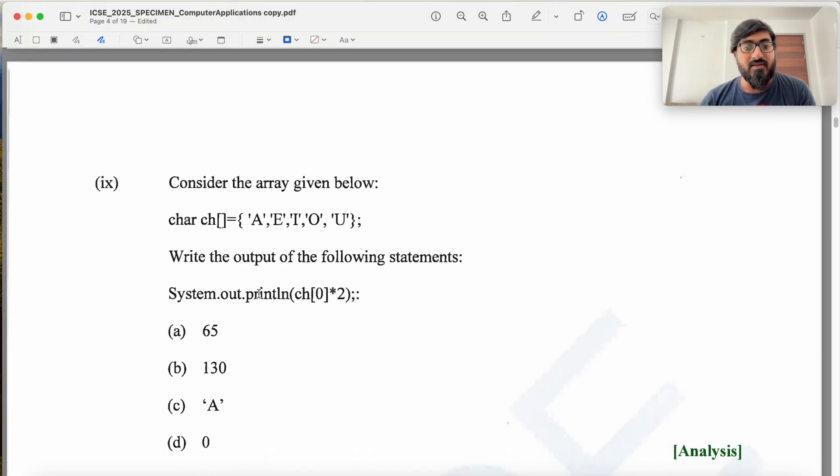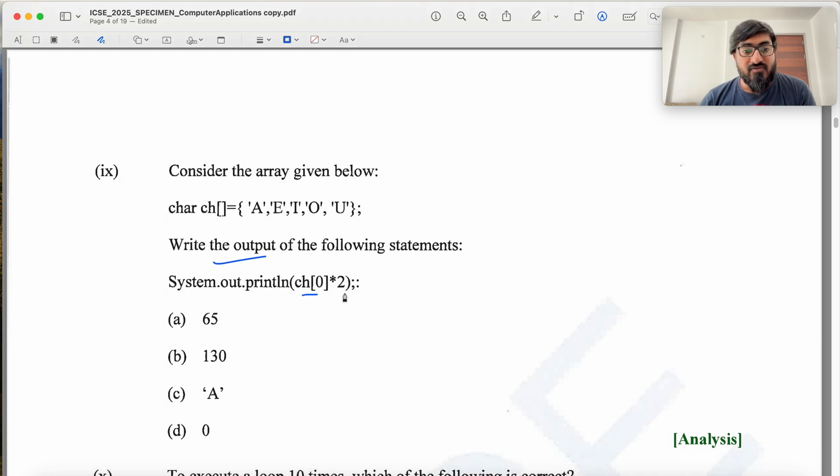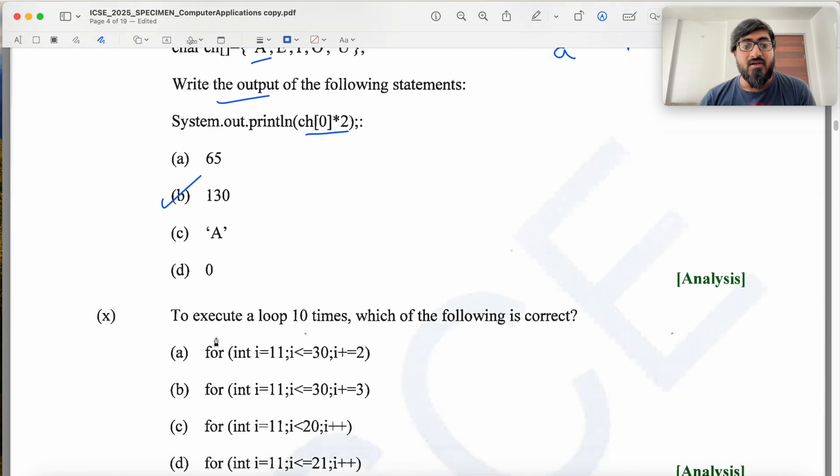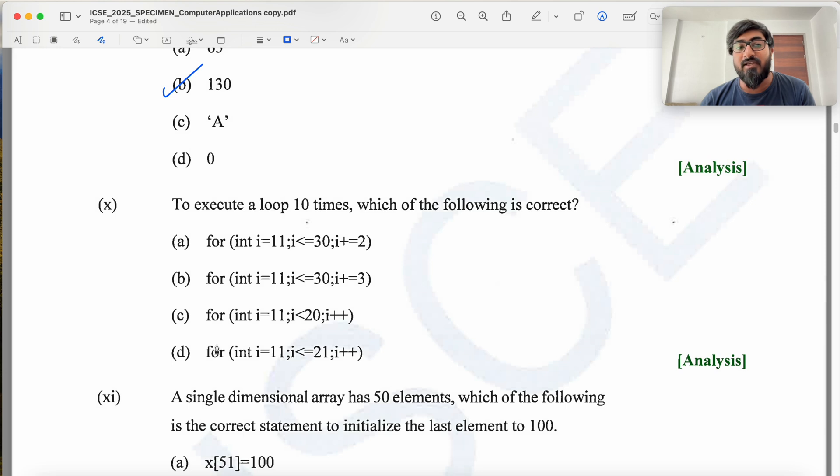Consider the array given below - what is the output of the following statements. CH of 0 into 2. So you are multiplying CH of 0 which is A into 2. ASCII value of A is 65. ASCII value of lowercase a is 97. So this is going to be 65 into 2, which is 130. To execute loop 10 times if the following is correct - you will have to find the values of I. For this case I starts at 11 and I is less than 30, I plus equal to 2. So I takes 11, 13, 15, 17, 19, 21, 23, 25, 27, 29 - less than 30. So this will run 10 times.